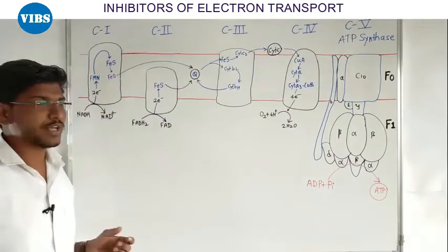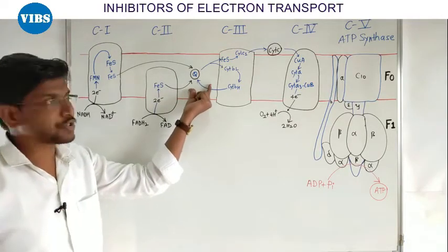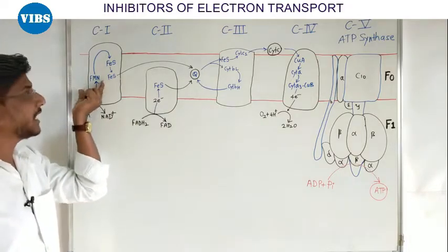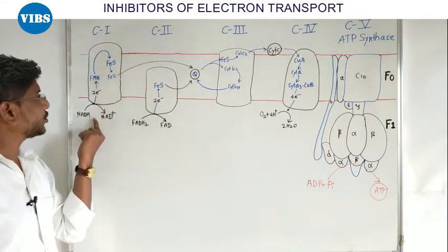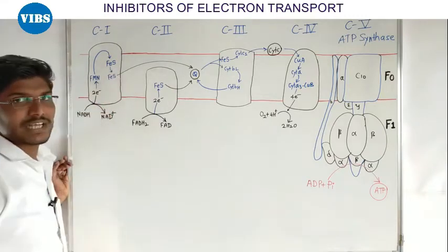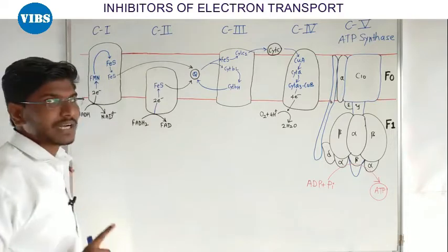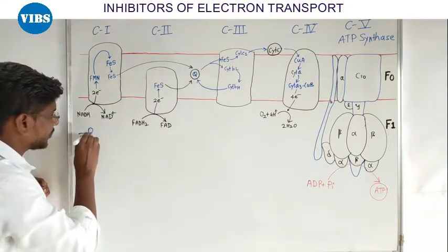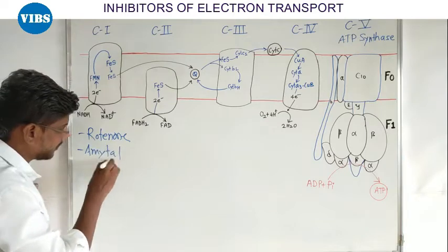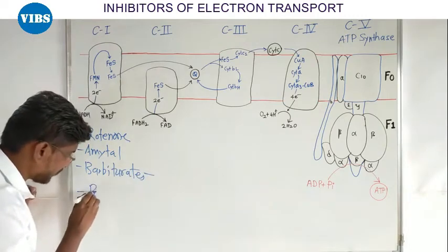So in this video we will discuss about the inhibitors of electron transport system. Complex I kya karta hai — woh NADH se electron leta hai and then joh mobile electron carrier jise hum ubiquinone kehte hai uske paas electron ko transport karta hai. Yaha pe FMN hai, uske baad iron sulfur centers hain, toh pehle NADH ke electron FMN ke paas aate hai, FMN unhe iron sulfur centers pe transport karta hai, and finally iron sulfur center se electron ubiquinone ke paas transport hote hai. Complex I ke inhibitors ke naam hain: Rotenone, Amytal, Barbiturates, and Piericidin A.